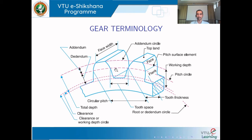The pitch point is the point of contact of the two pitch circles. When two gears are in mesh, if you draw the pitch circle for both gears, they will intersect at one point — that point is called the pitch point.